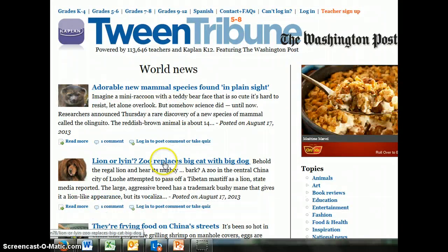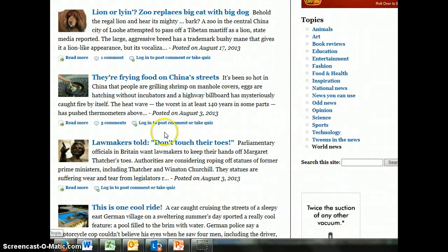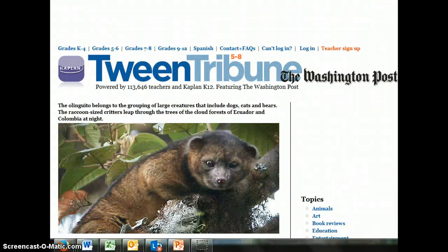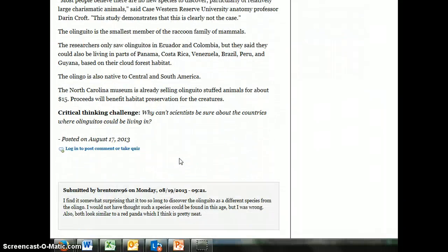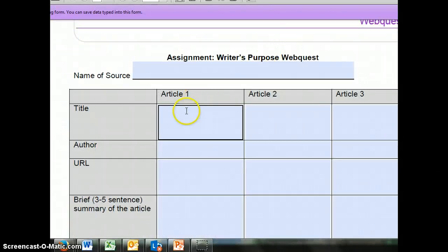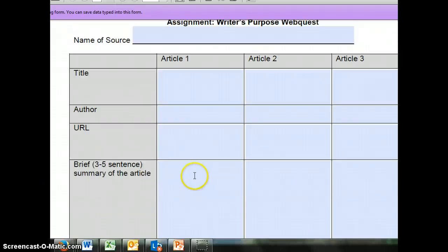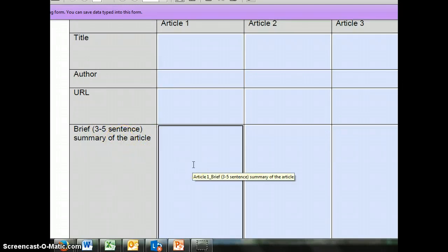I'm going to move our screen over just a tiny bit and so we've got adorable new mammal species found in plain sight, or lion zoo replaces big cat with big dog, you're frying food on Chinese streets. Okay so you could just choose one, you could even get really serious like lawmakers told, don't touch your toes. So this is our world news. Maybe I'm just going to click here so I'm going to read through this article. The articles are not very long, I'm going to scroll down so you can see how long they are and that's it. So they're pretty, I feel like they're very manageable. So if I was filling out my graphic organizer right here under article one I'm going to put my title, I'm going to put my author and I'm going to put the URL. The URL is the link directly to the article. So to get that I would go up into the address bar, copy and just paste that in here. Now I'm going to write a brief summary. Notice that it says just three to five sentences, it doesn't have to be long.